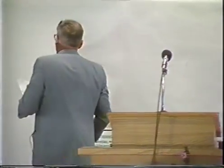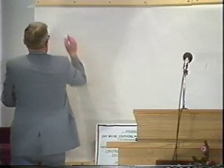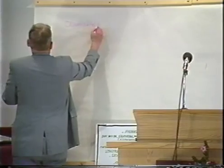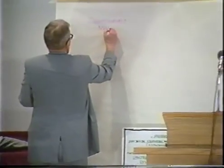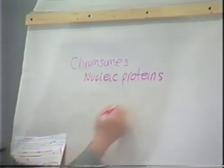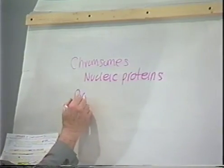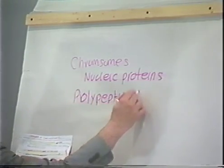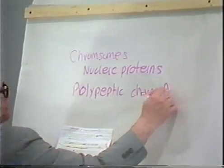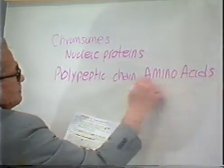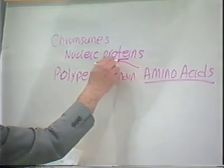Which brings us back to the original ancestor. Now here's what you got. Chromosomes are composed of what they call nucleic proteins. That's what they're after. These proteins are formed by what they call a polypeptide chain of amino acids. So what they're working for right now is to manufacture those in order to produce them.